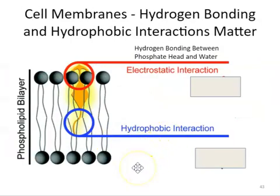A place where both these types of interactions, both hydrophobic interactions and hydrogen bonding really matter, are in what are called phospholipid bilayers, which is what a cell membrane is made out of.